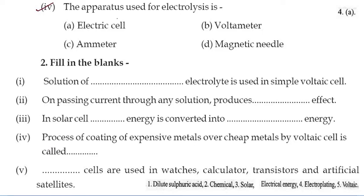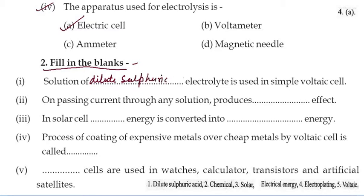Third, the process of depositing a layer of any desired metal on another material by means of electricity is known as electroplating. Fourth, the apparatus used for electrolysis — the answer is the electric cell. Now fill in the blanks: number one, the solution of electrolyte used in a simple voltaic cell is dilute sulfuric acid. Number two, on passing current through any solution it produces a chemical effect.